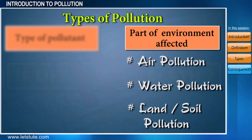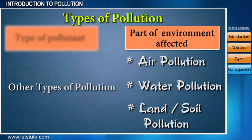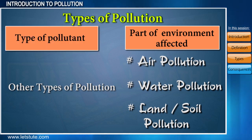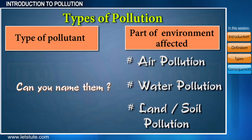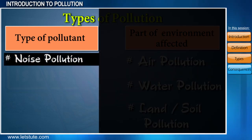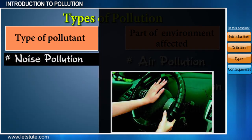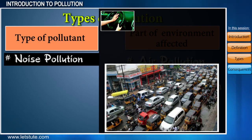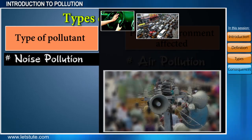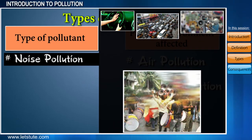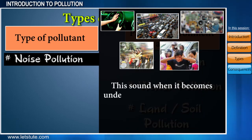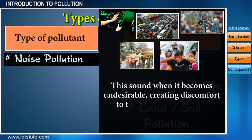But do you know there are some other kinds of pollution as well? The ones that depend on the type of pollutant or contaminant that is added. Noise pollution — the sound generated from various vehicles during transportation, the honking of horns at traffic signals, the sound of loudspeakers, playing drums, etc. — at times becomes very annoying. When this sound becomes undesirable, creating discomfort to the ears, we call it noise pollution.